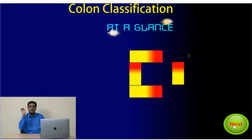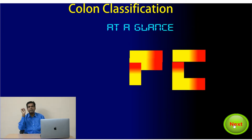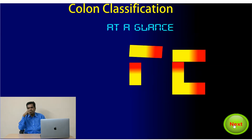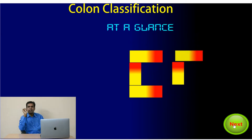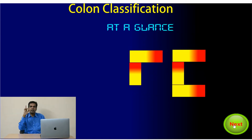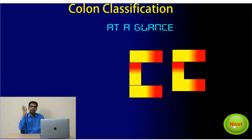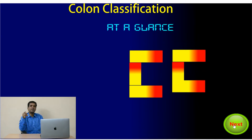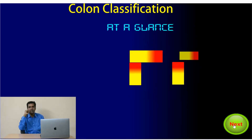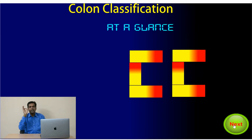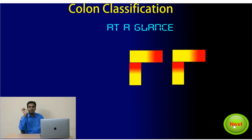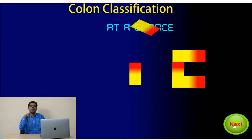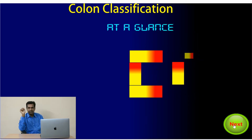Colon Classification Scheme is not an enumerative scheme like other classification schemes. Document titles need to be analyzed and broken down into various facets, and the right notations need to be identified from the unit schedules available in the Colon Classification Scheme, where you can find the facet formula and a set of rules to sequence the facets. That is why it is called an analytical-synthetic classification scheme.